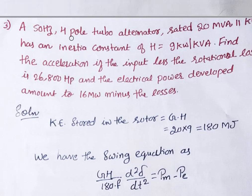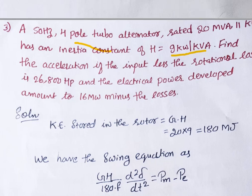Now we will go to the third problem. A 50 Hz, 4-pole turbo alternator rated 20 MVA has an inertia constant H = 9 kW per kVA — here it is given in kW per kVA instead of MW per MVA. Find the acceleration if the input less rotational losses is 26,800 HP, and the electrical power developed amounts to 16 megawatt minus losses. The mechanical input is 26,800 HP and the electrical power is 16 MW.